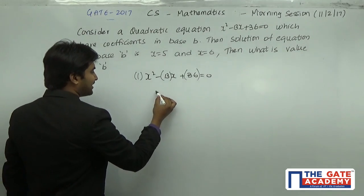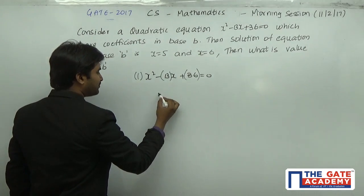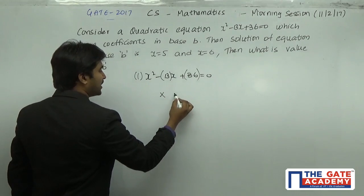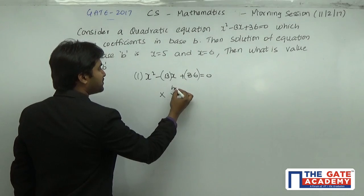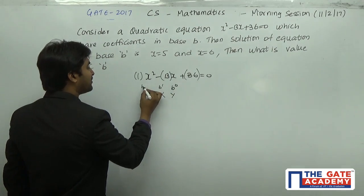So if you have a particular number, whatever be the number, for example if I have xy, if the base of this particular number xy is B, I can write it as B⁰, B¹, and B².